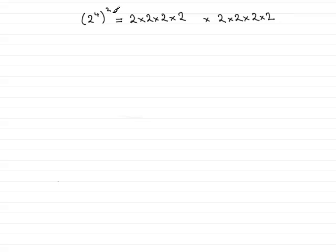So 2 to the power of 4 all squared is short for this. And because we've now got 2 repeatedly multiplied by itself a total of 8 times over then I can write this as simply 2 to the power of 8.